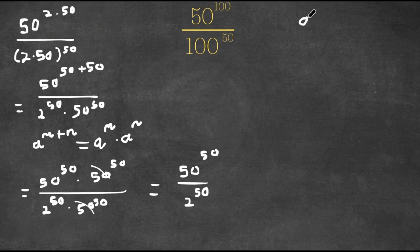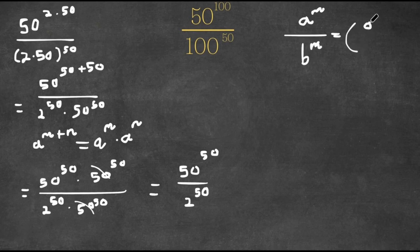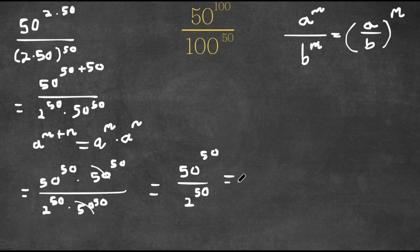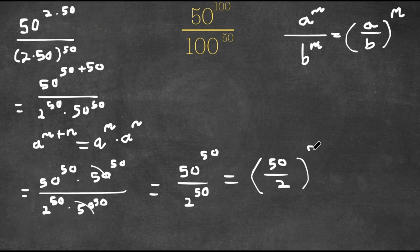And this would equal 50 to the power of 50 over 2 to the power of 50. Now if we have something in the form a to the power of m over b to the power of m, this is equal to a over b to the power of m. So 50 to the power of 50 over 2 to the power of 50 is going to equal 50 over 2 to the power of 50. And 50 divided by 2 is 25, so 25 to the power of 50.